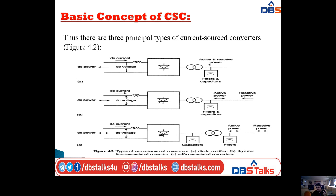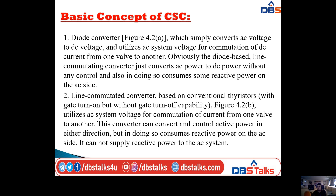In all three diagrams we have active and reactive power flows. Coming to the first type — the diode converter — which simply converts AC voltage to DC voltage and utilizes AC system voltage for commutation of DC current from one valve to another. The diode-based line-commutating converter just converts AC power to DC power without any control, and in doing so consumes some reactive power on the AC side.